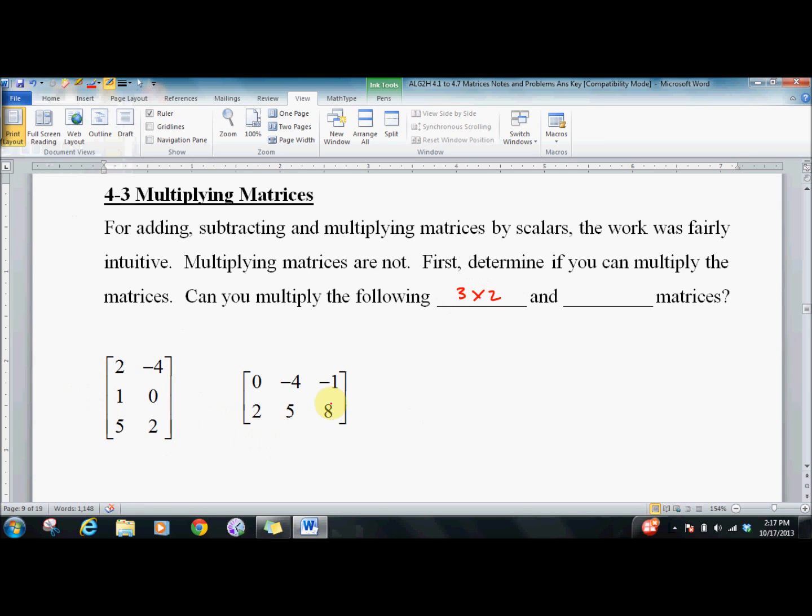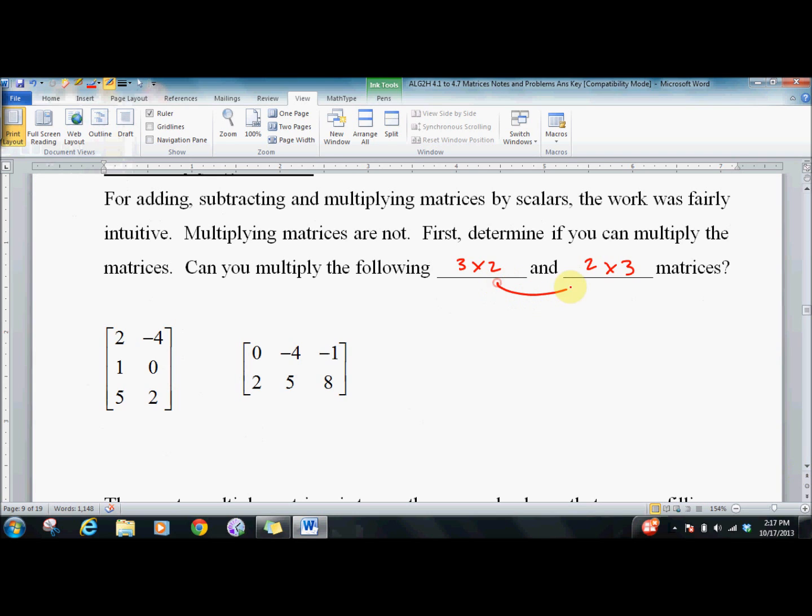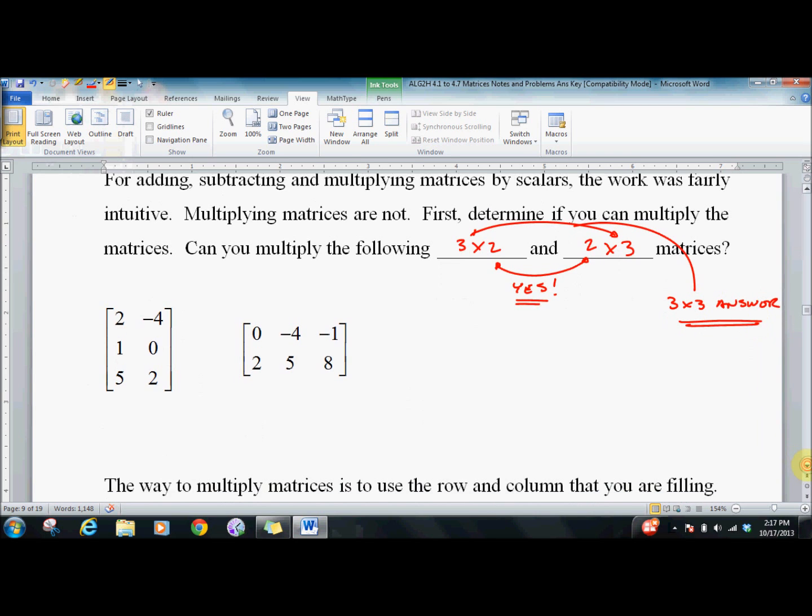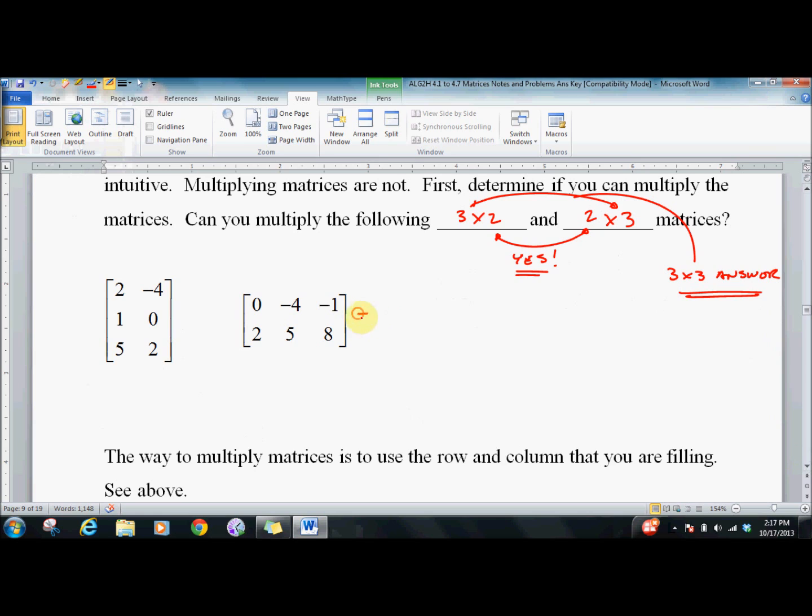We look at the inner numbers. If they're the same we can multiply, if they're not we can't. And the outer numbers tell us we'll have a three by three. That's our answer. So we're going to multiply these.